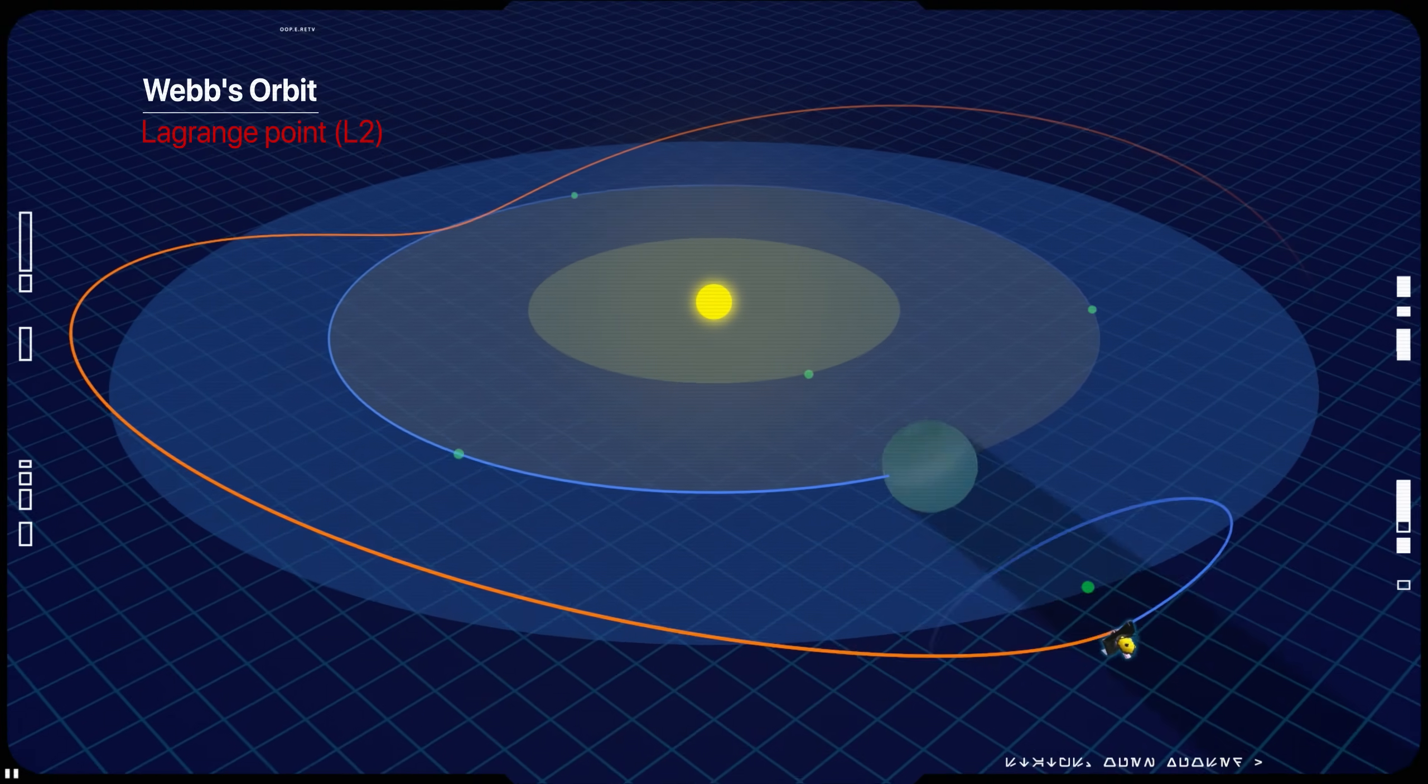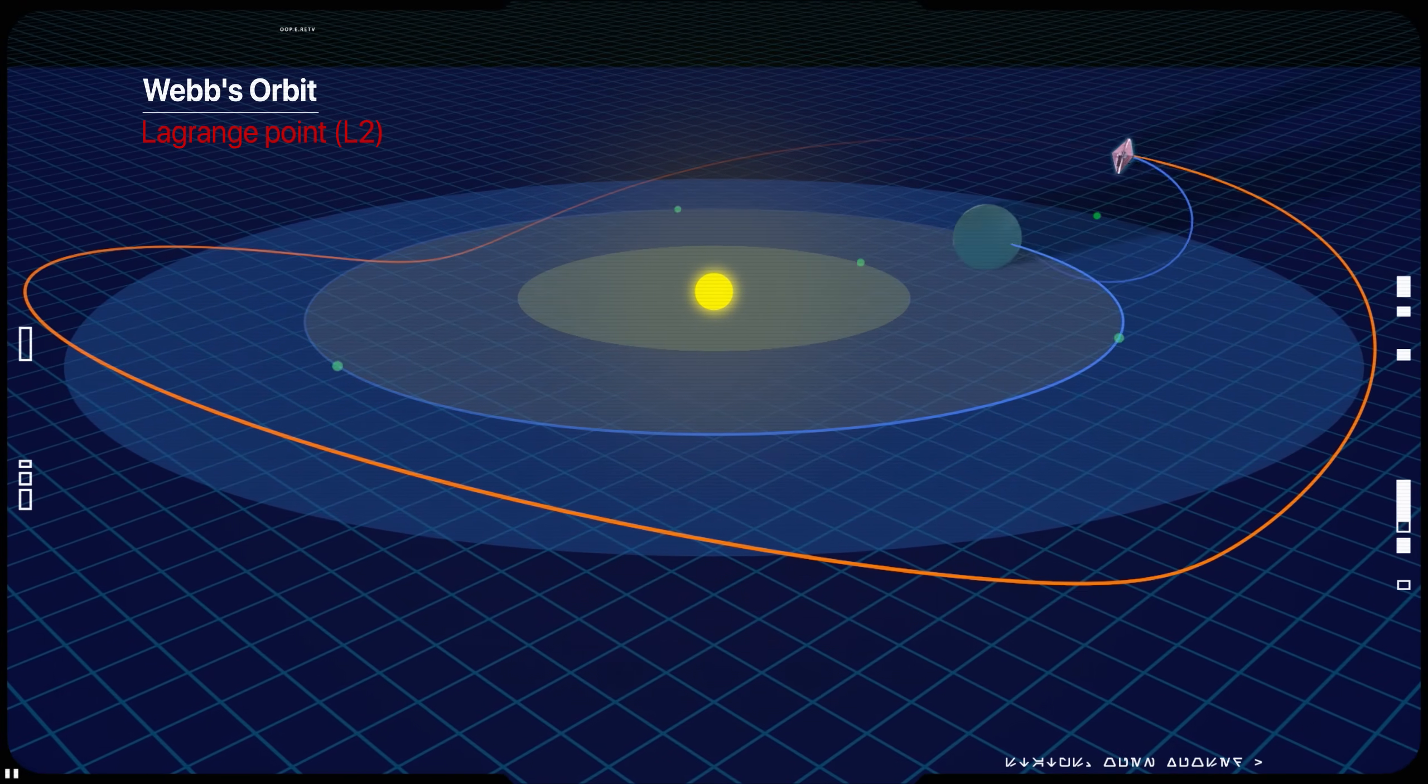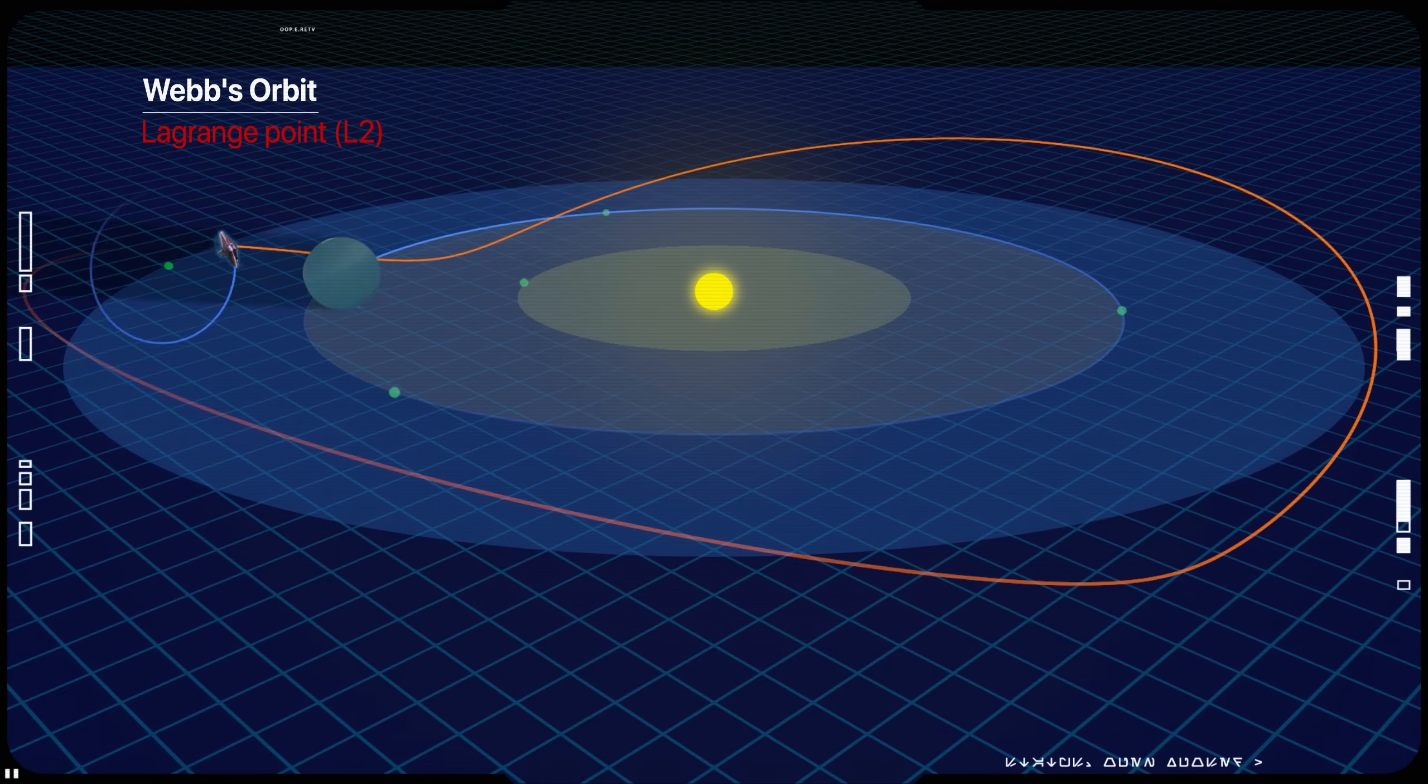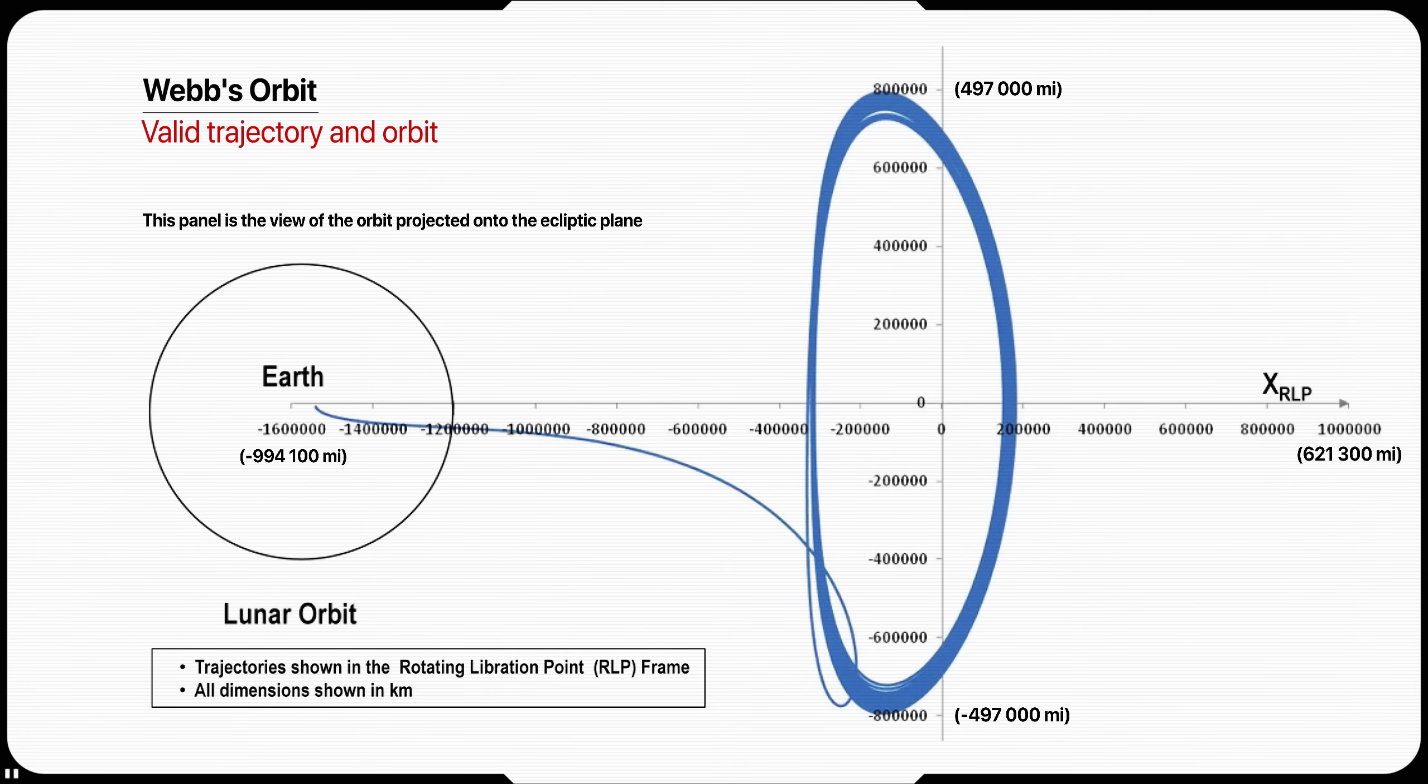It is incorrect to say that James Webb will be at L2. Rather, James Webb will orbit around L2. The distance of the telescope from the L2 point varies between 250,000 to 830,000 kilometers.